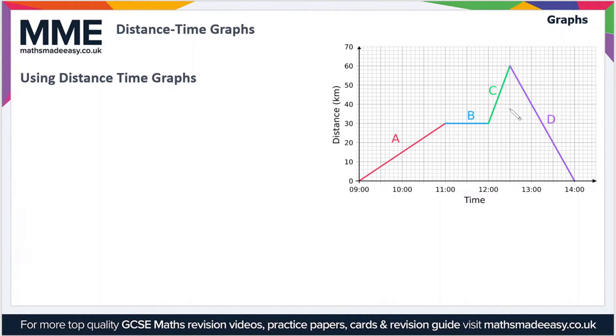We'll start off with section A. In section A we've started at zero in distance traveled and we've gone to a distance of 30 kilometers by the end of the section, so we can say we've traveled 30 kilometers. We have to look at the time span now, which is from 9 a.m. to 11 a.m., so that's two hours. In section A we've traveled 30 kilometers in two hours.